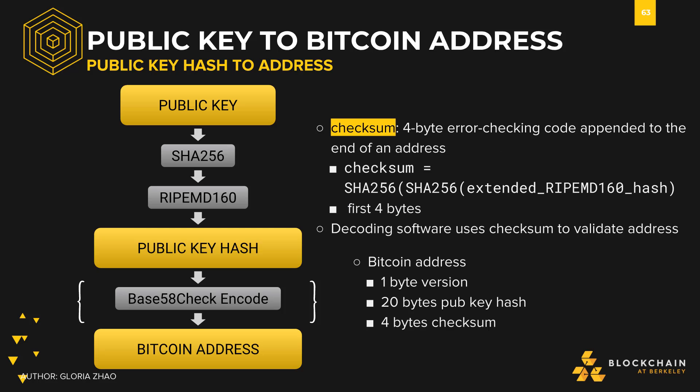Then we calculate a checksum. We perform SHA256D on our extended RipeMD160 hash, running SHA256 on it twice. We take the first 4 bytes of our SHA256D hash as our checksum and append it to the end of our extended RipeMD160 hash.